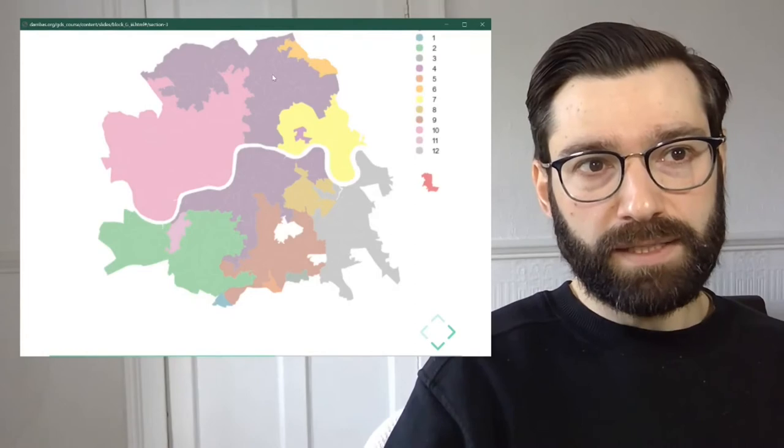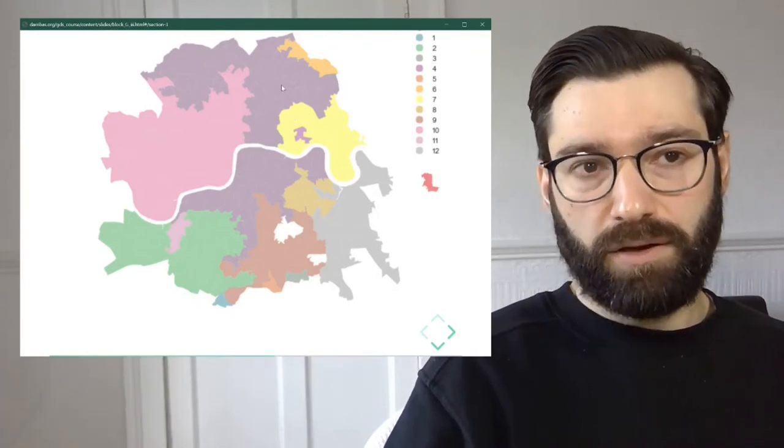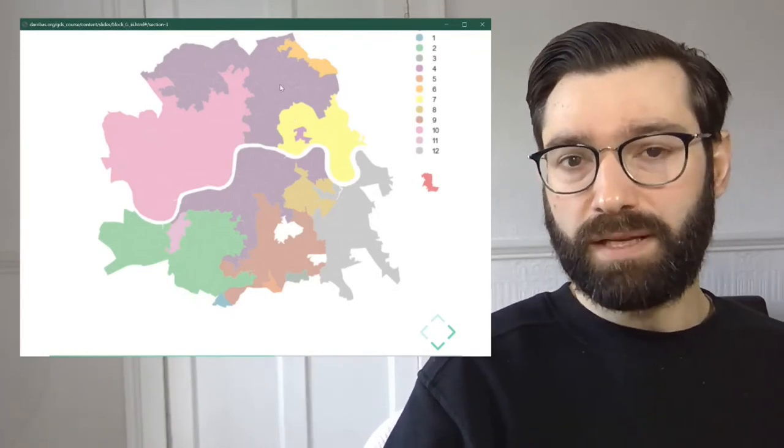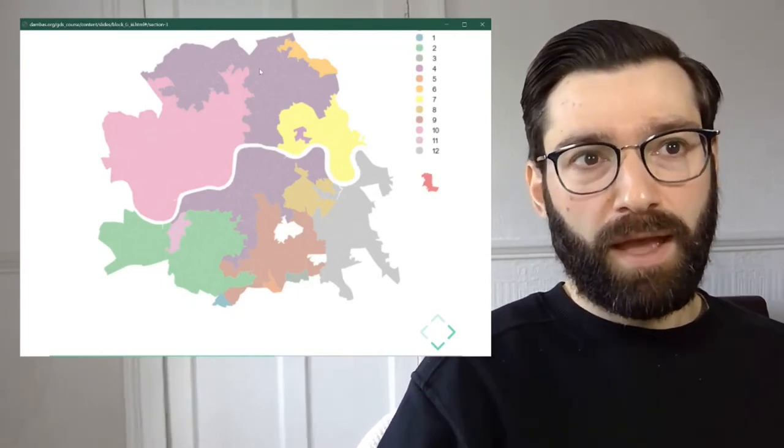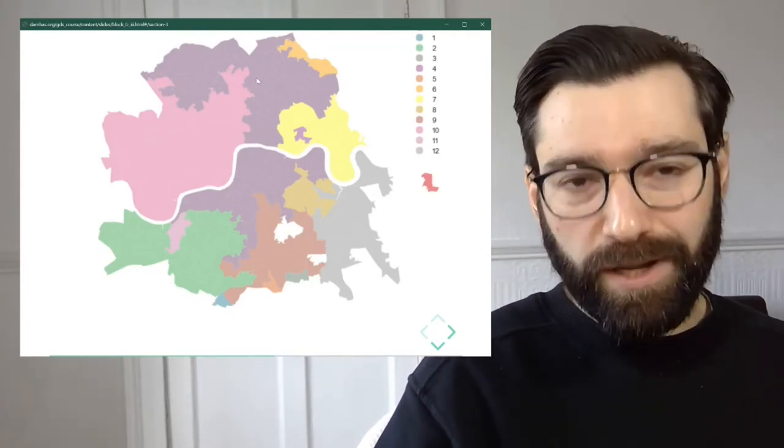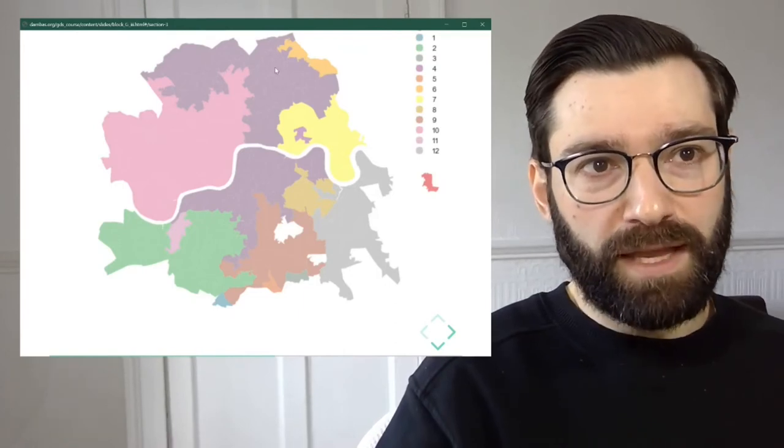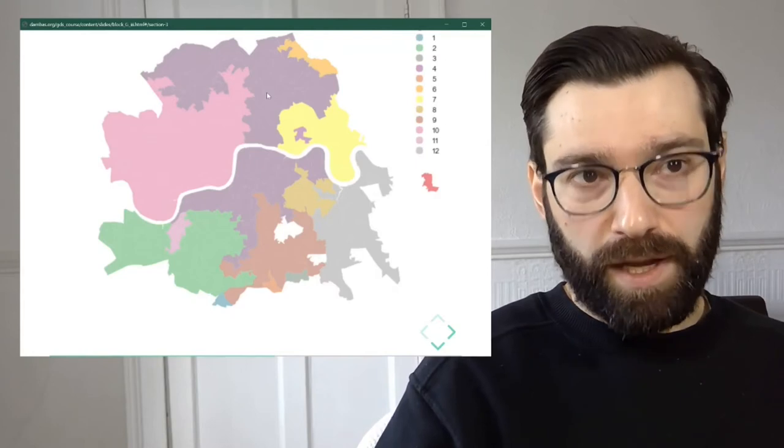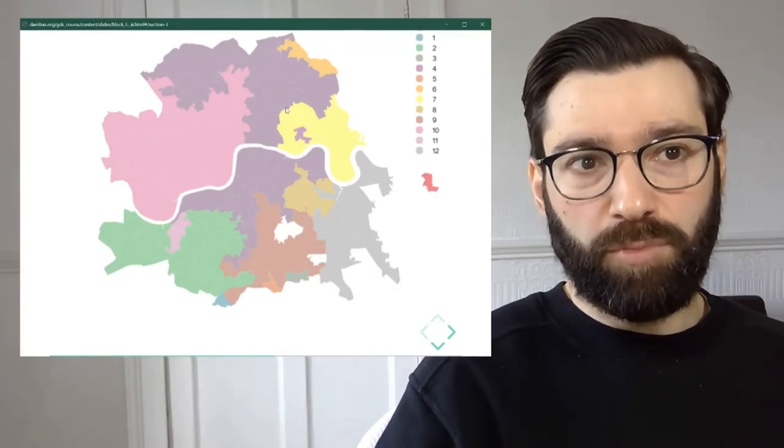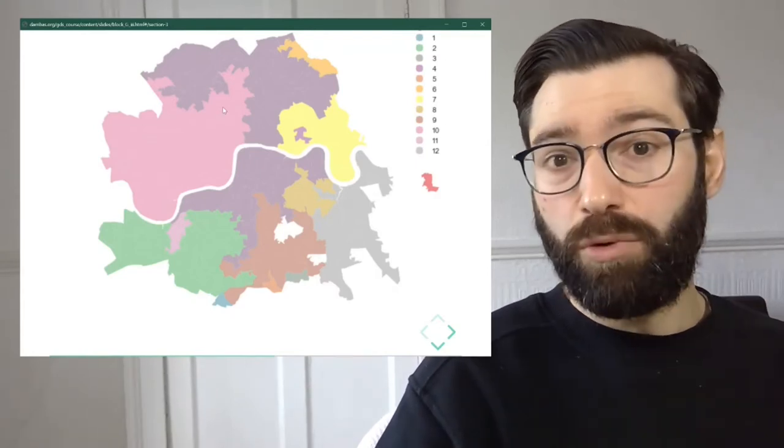What you're seeing here is the center of London, and this is from the example that you will work through in the practical side of the block. And maybe if you squint a little bit, you manage to see that each region is delineated by color, but each region has a lot of polygons. And each polygon is what we call an area.